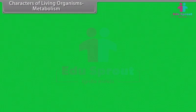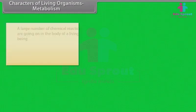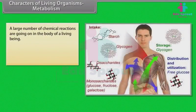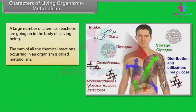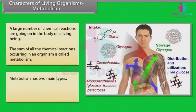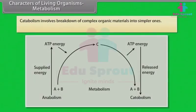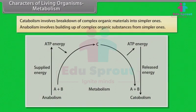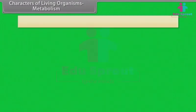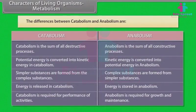Metabolism: A large number of chemical reactions are going on in the body of a living being. The sum of all the chemical reactions occurring in an organism is called metabolism. Metabolism has two main types: catabolism and anabolism. Catabolism involves breakdown of complex organic materials into simpler ones. Anabolism involves building up of complex organic substances from simpler ones.